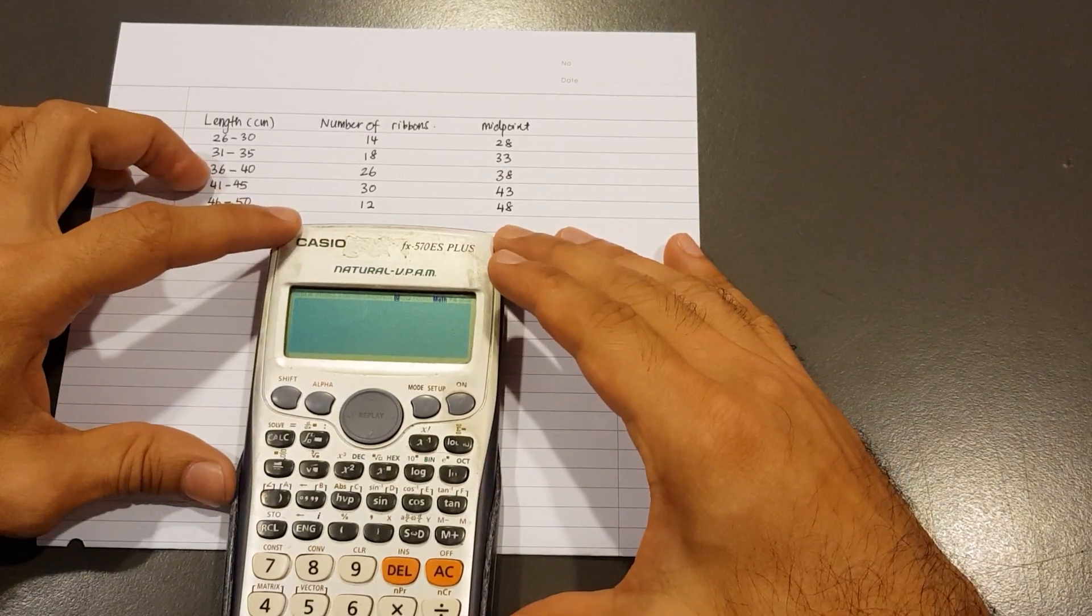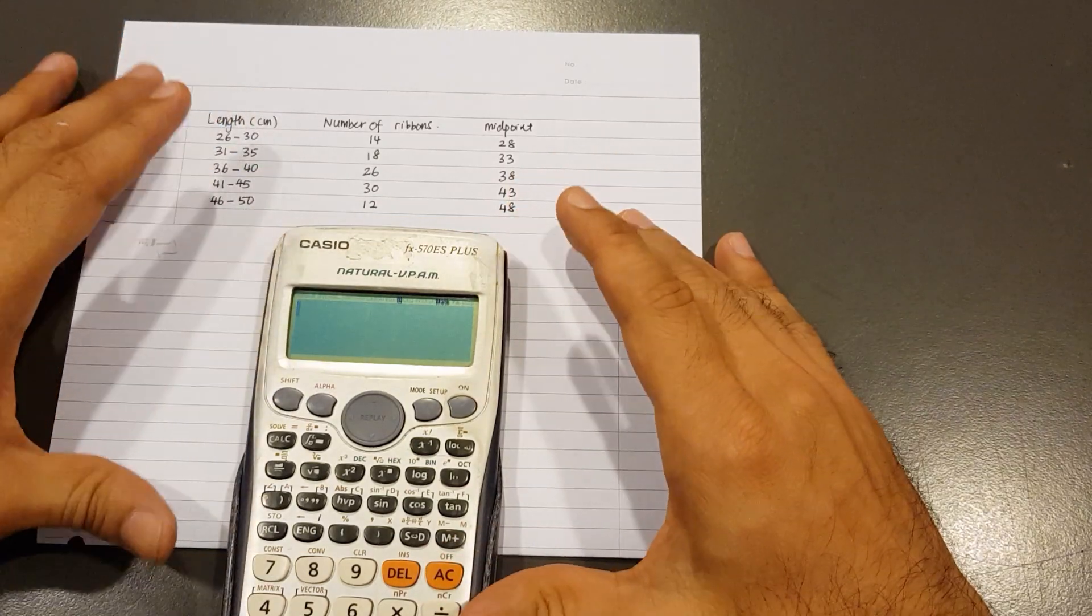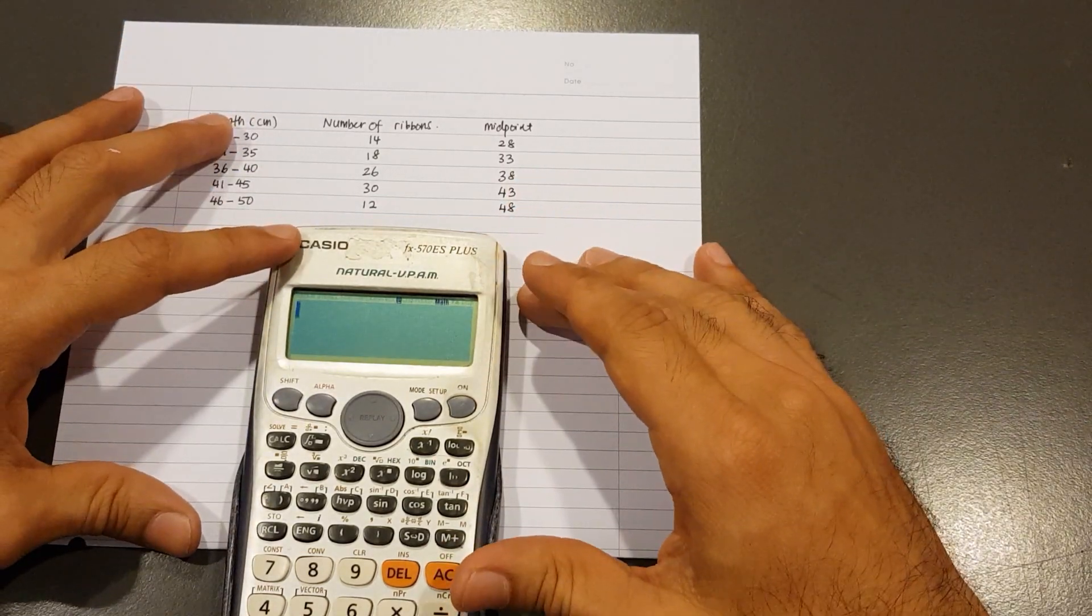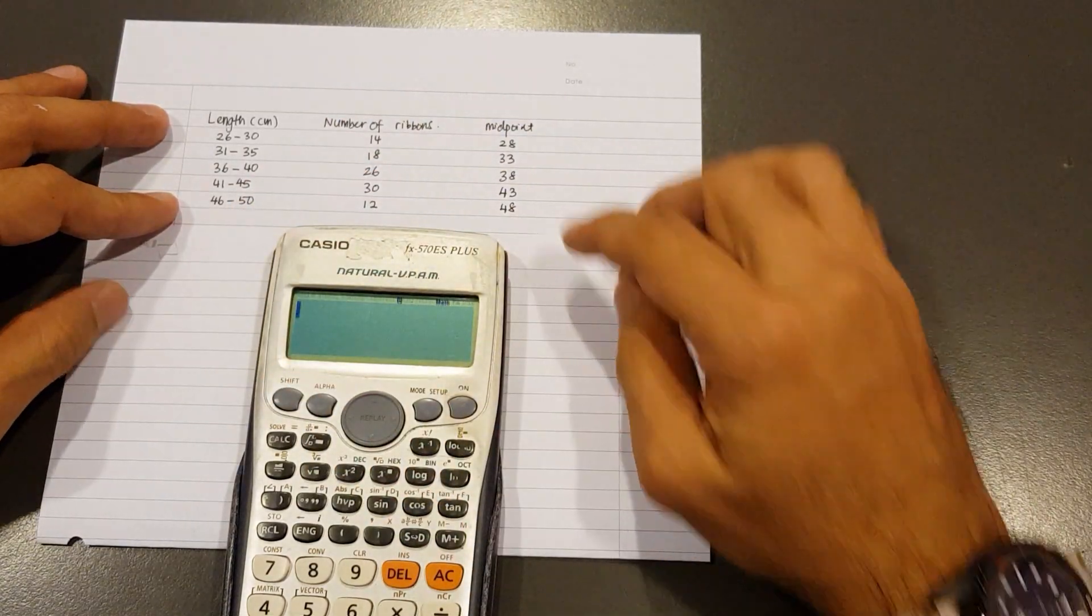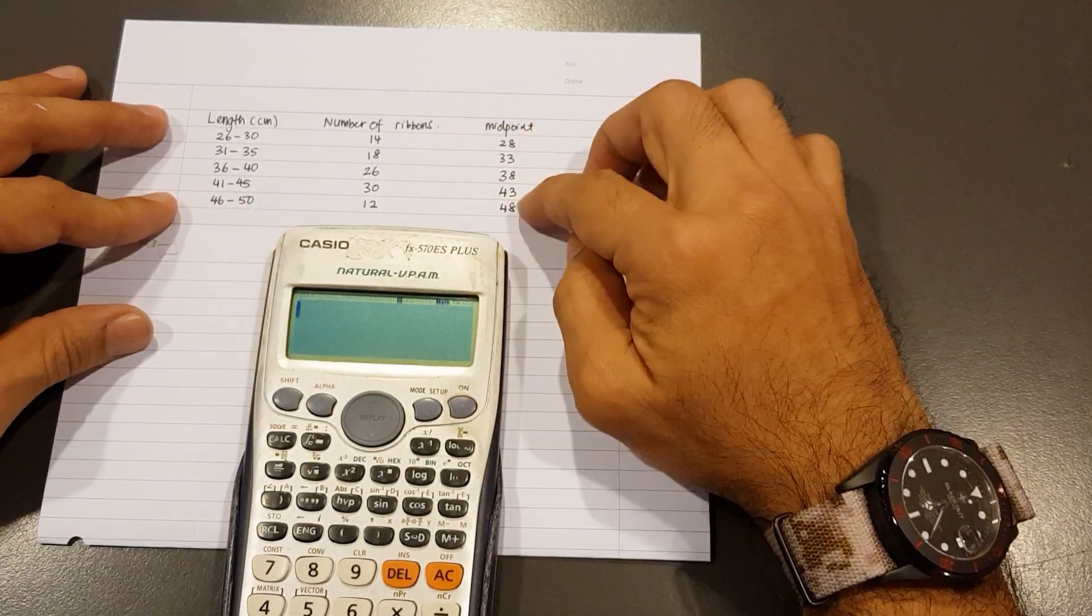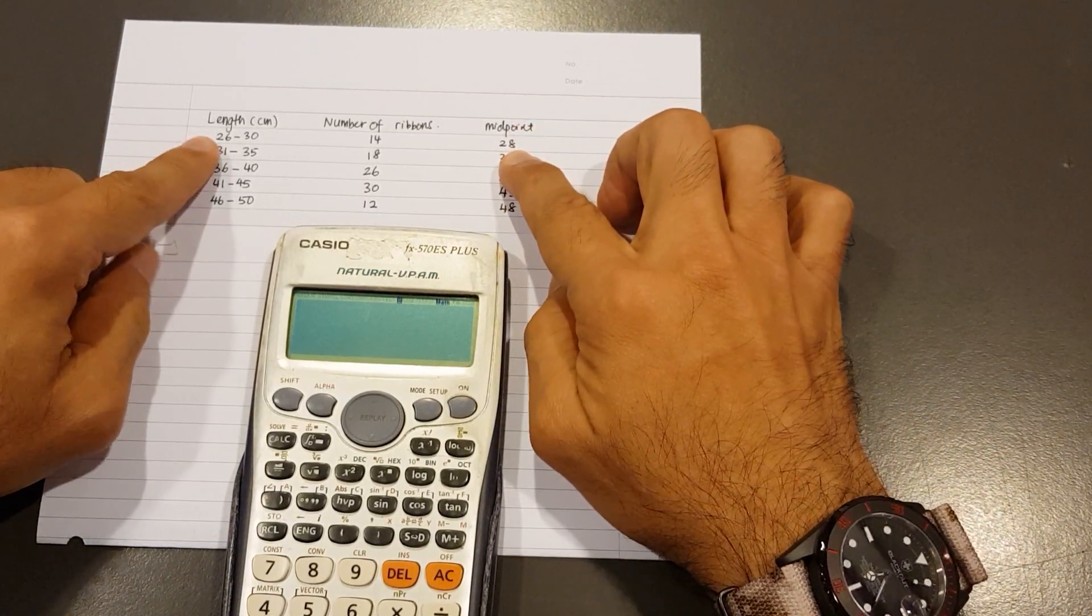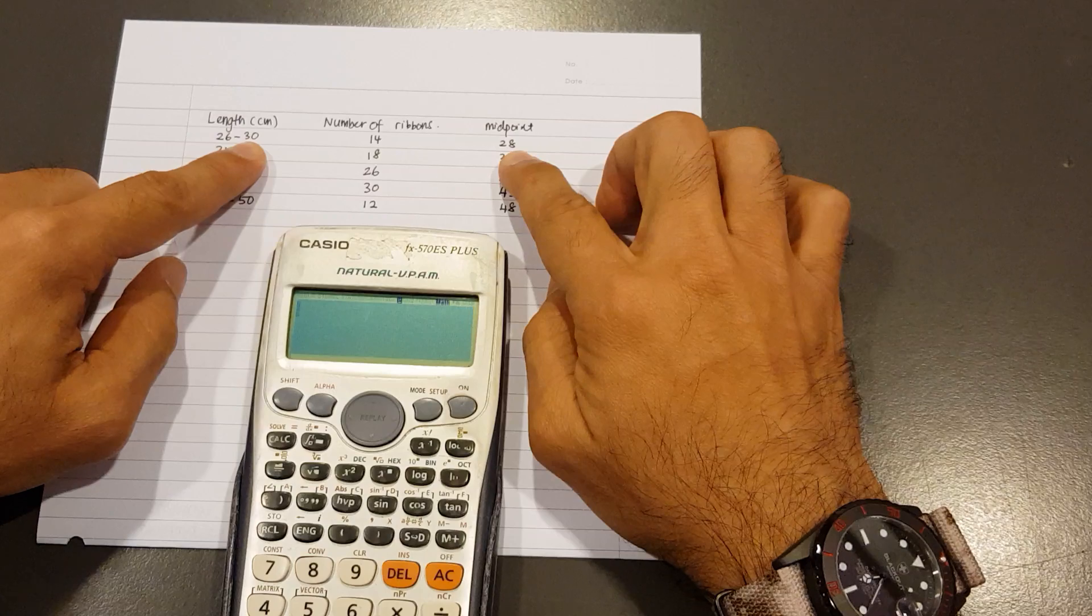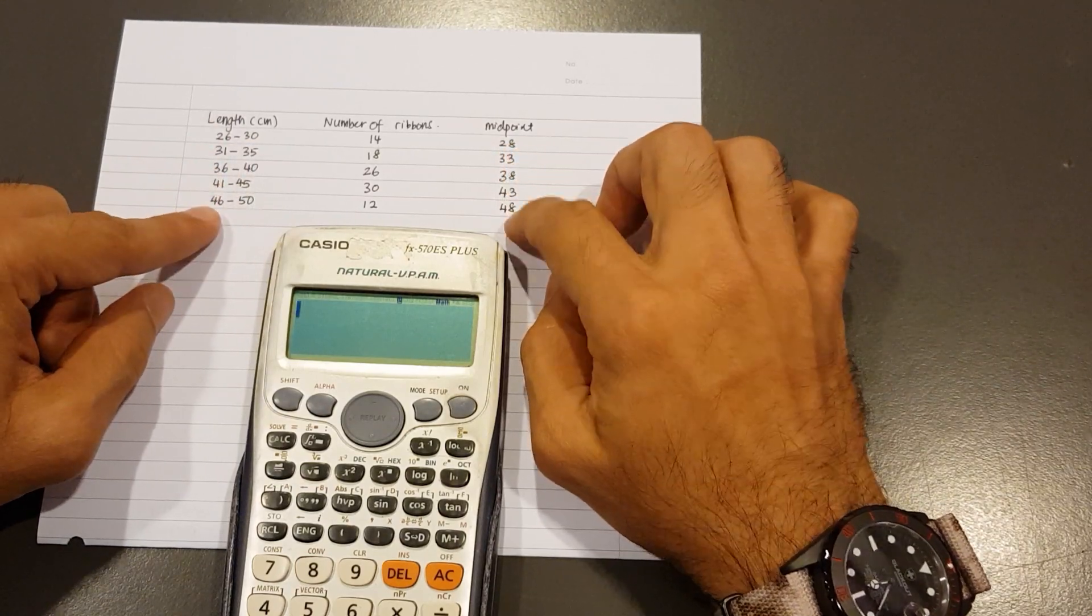Now we have the 570ES Plus. This calculator is a bit different - it's the newer version compared to the 570MS. The table is the same. You have to find the midpoint.